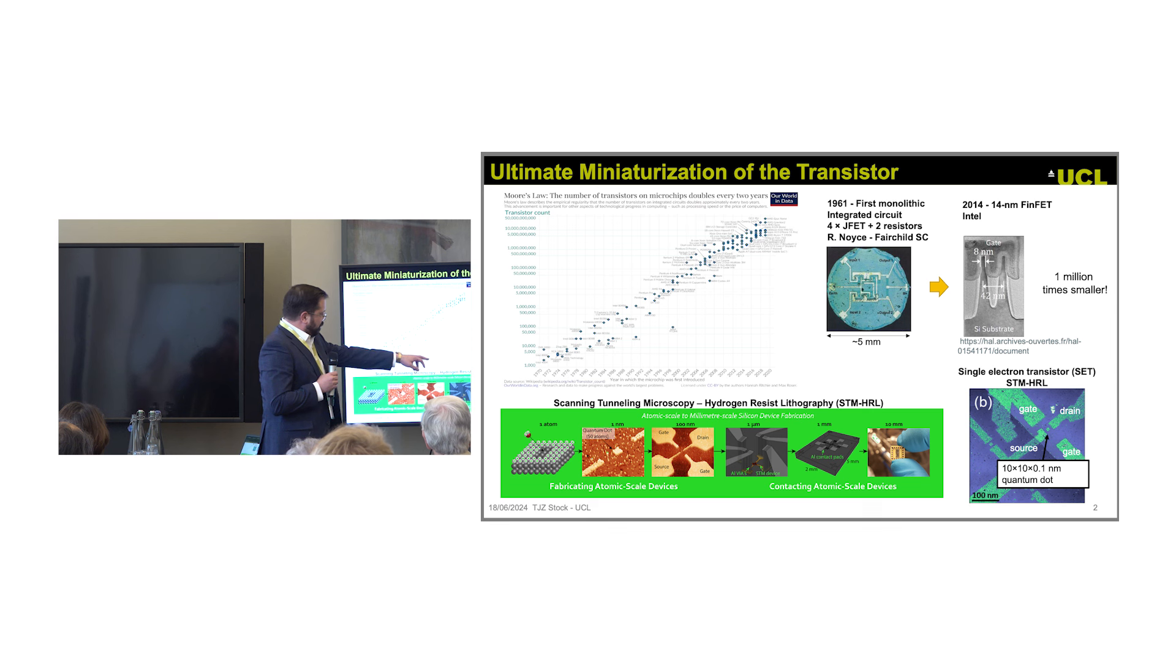Here's an example of a single electron transistor built this way. The active area is 10 by 10 nanometers, but one atom thick. This can actually be taken all the way down to a single atom as the active element in your transistor. It represents the final limit in scaling of transistors, the smallest transistor you can make in silicon.